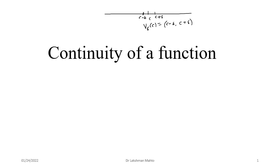This is a delta neighborhood with respect to point c. We also have a neighborhood along the vertical axis for a real number L, denoted V-epsilon around L, which is an open interval from L minus epsilon to L plus epsilon. The horizontal axis is generally called the x-axis and the vertical axis is called the functional axis or y-axis.